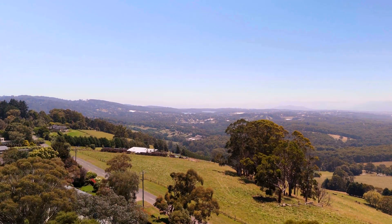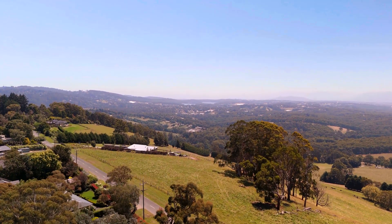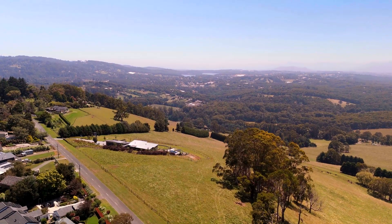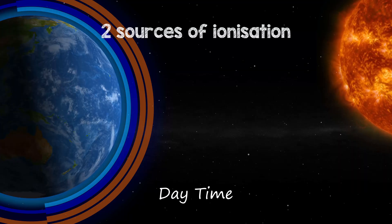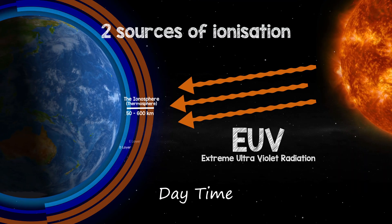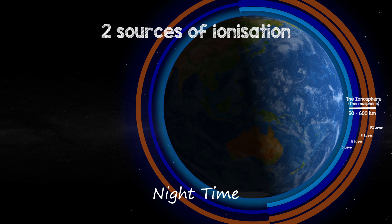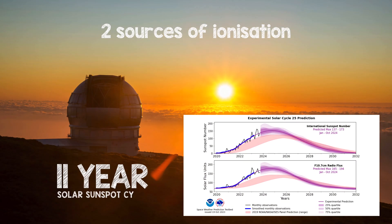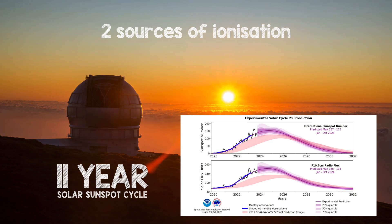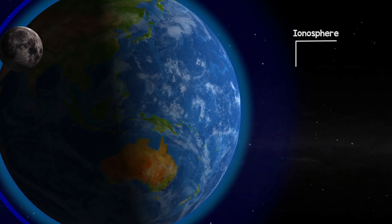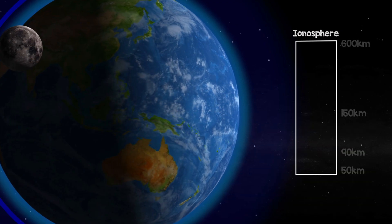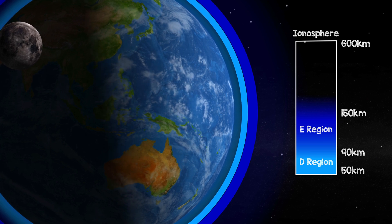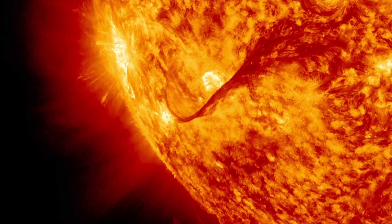The ionosphere varies greatly because of the changes in two sources of ionisation. It responds to UV radiation as it varies over the daytime and nighttime, as well as the 11-year sunspot cycle. On a shorter timescale, solar X-ray radiation increases D and E region ionisation dramatically when a solar flare occurs.